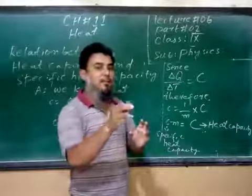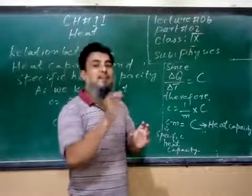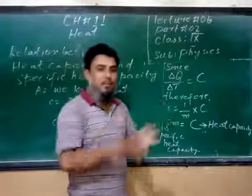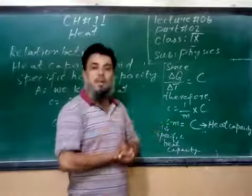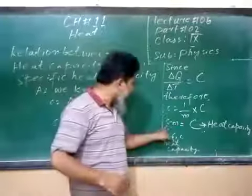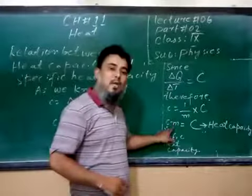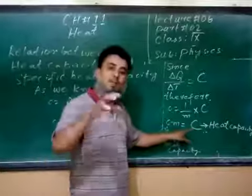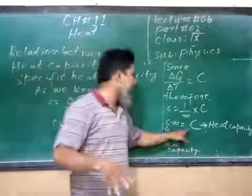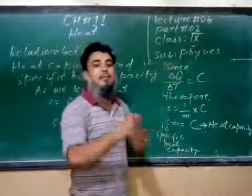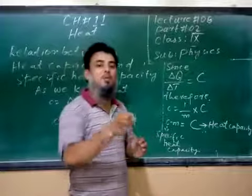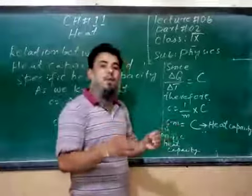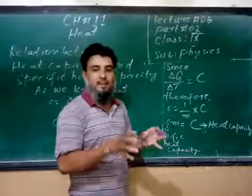So this multiplication is called heat capacity. Heat capacity is the product of specific heat capacity and mass of the substance. Heat capacity is specific heat capacity times mass of the substance.